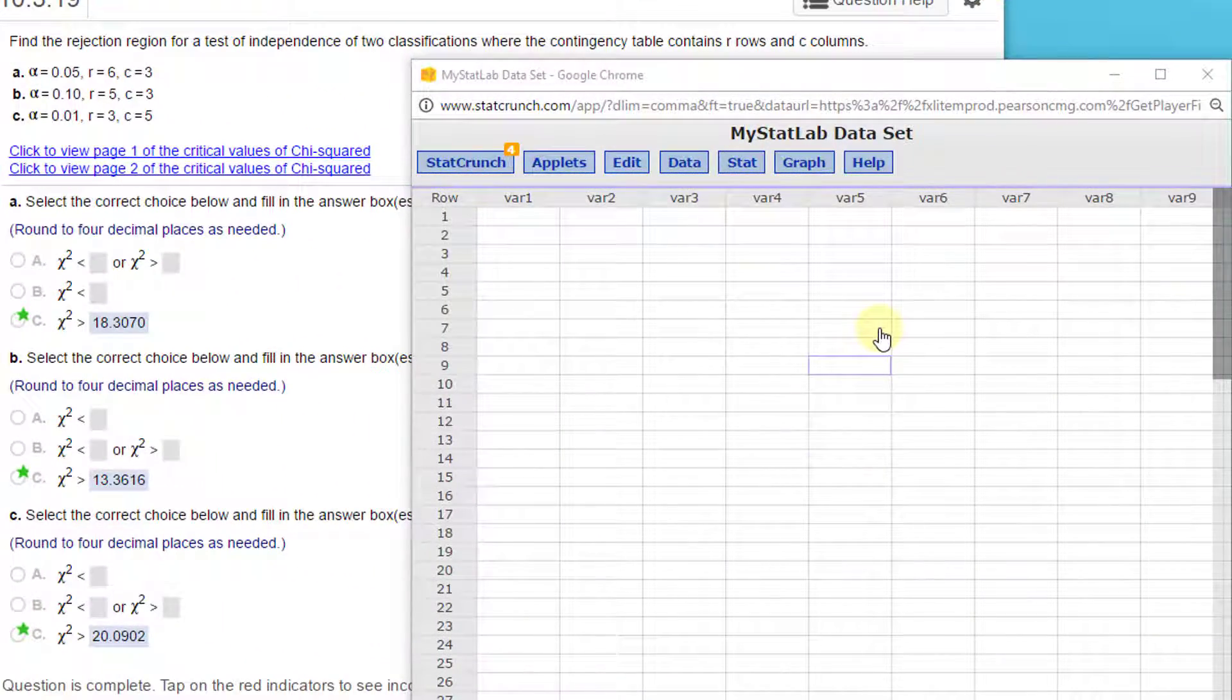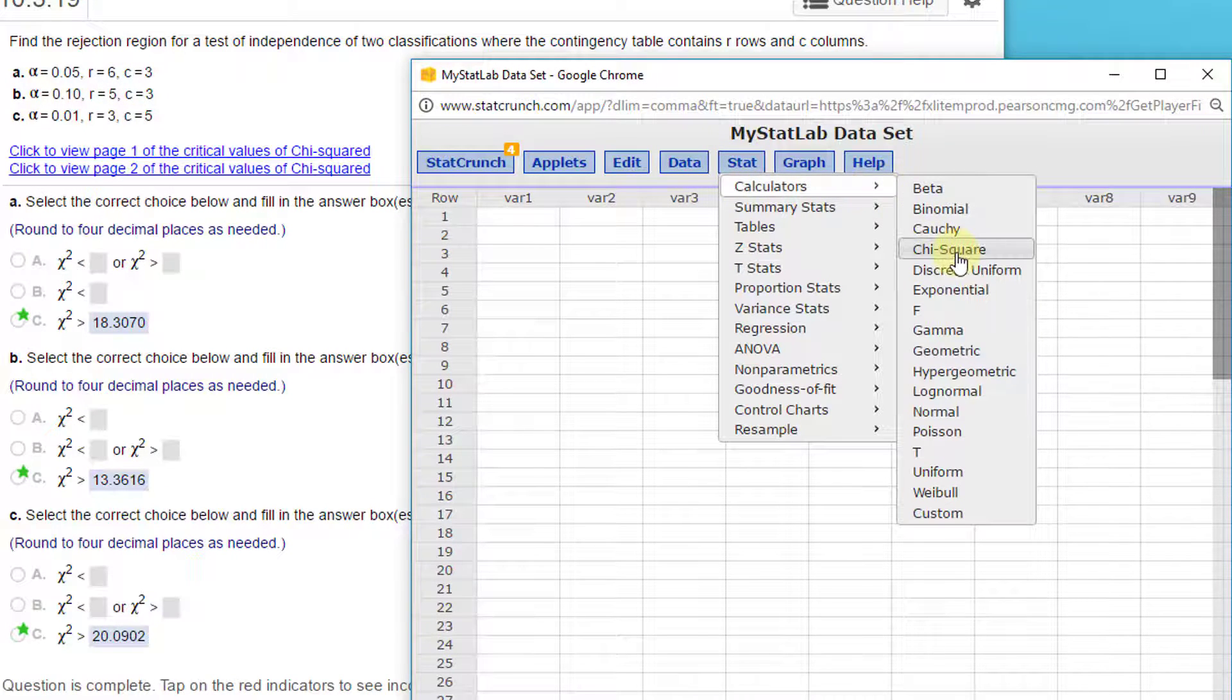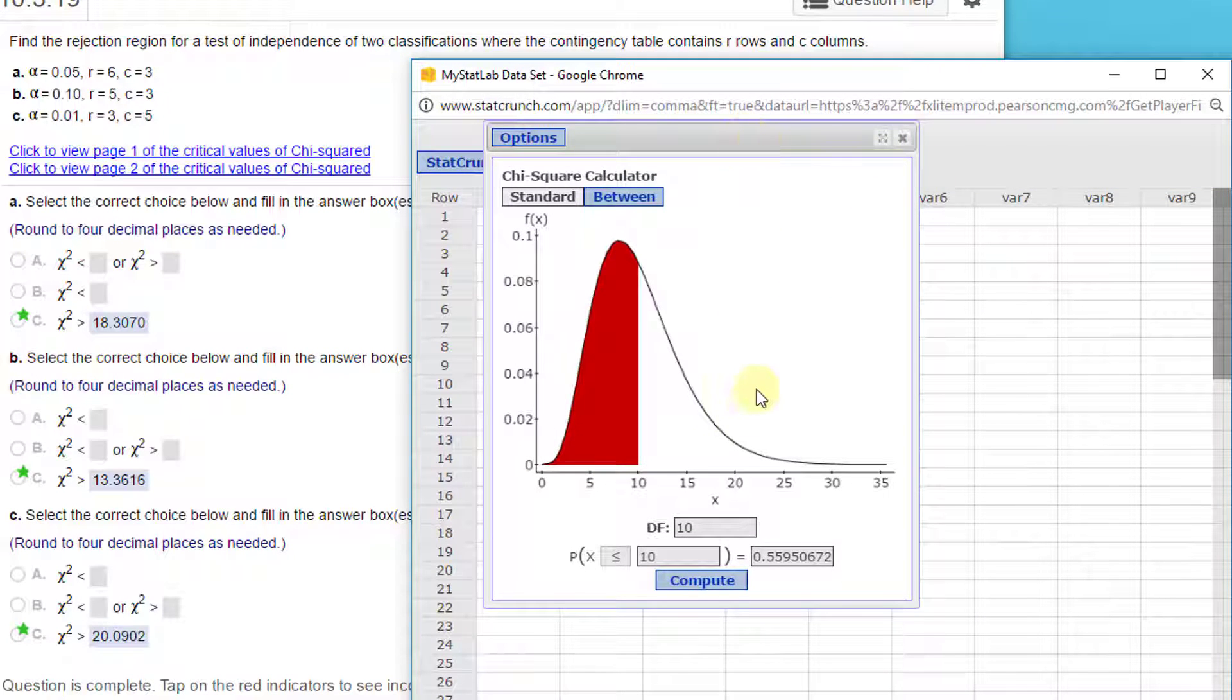Okay, I brought StatCrunch up. The first problem is alpha of 0.05 with rows equals 6 and columns equal 3. Let's go to Stat, Calculators, Chi-Square and look at our dialog box there.